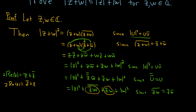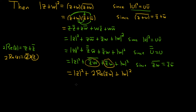We can see that z-conjugate times w is our complex number z in the identity. So now this becomes: modulus of z squared, plus two times the real part of z-conjugate times w, plus the modulus of w squared. And that's because of the identity that two times the real part of z equals z plus z-conjugate.